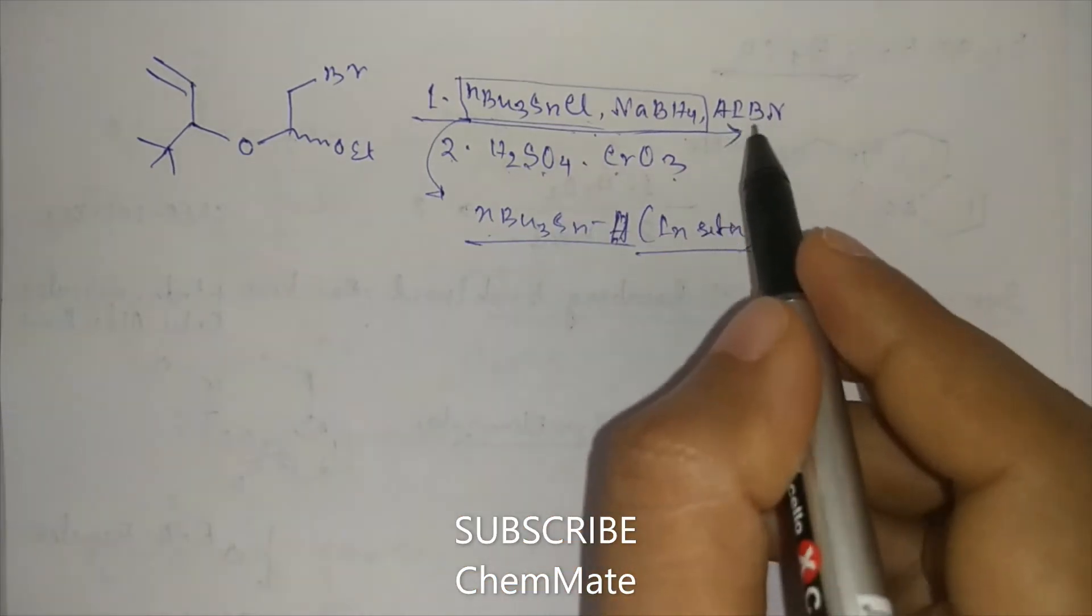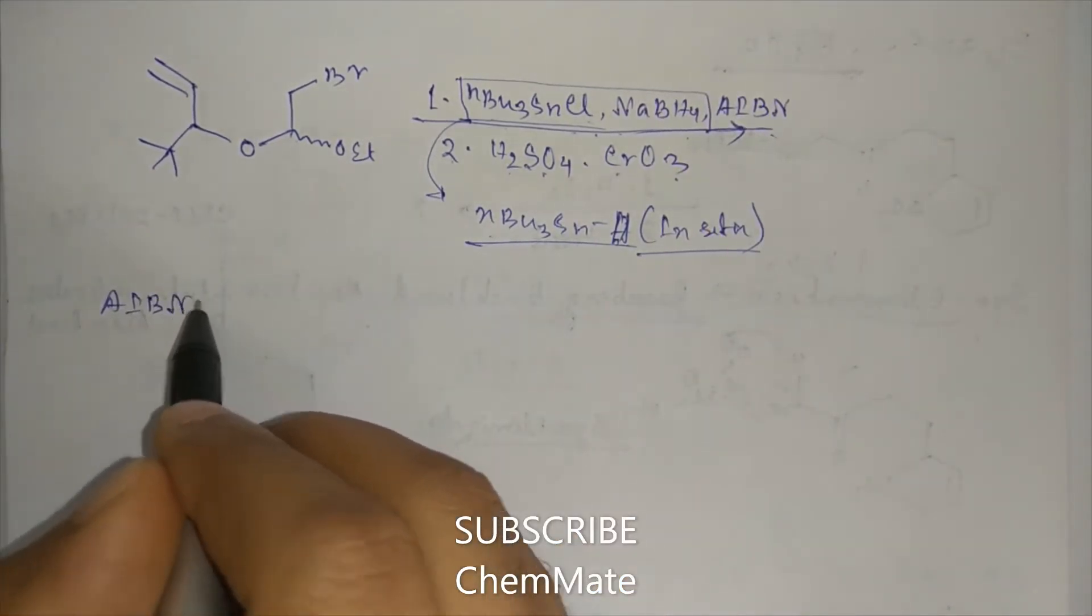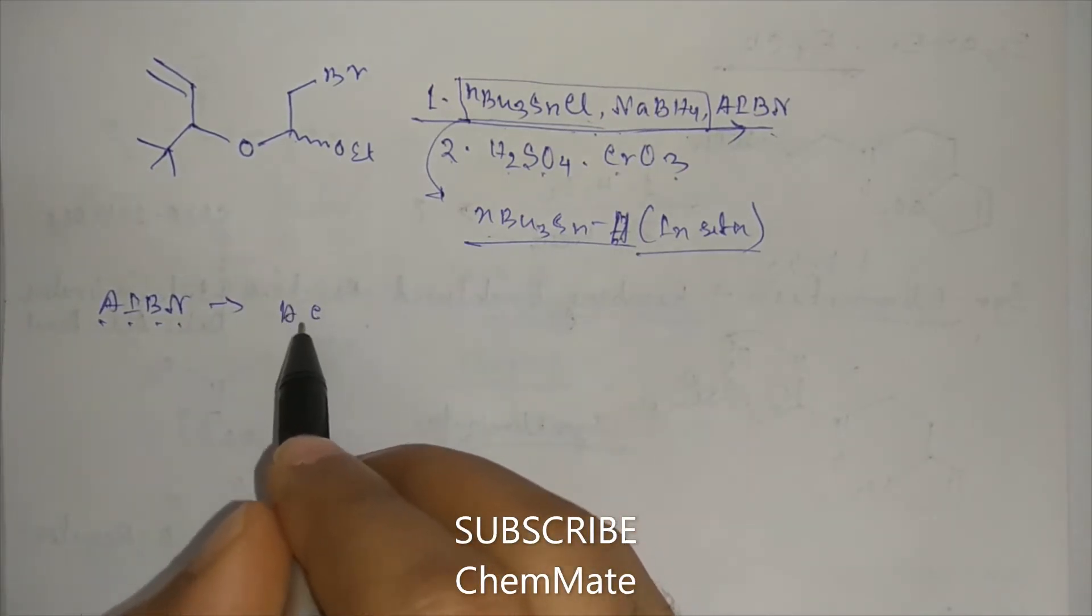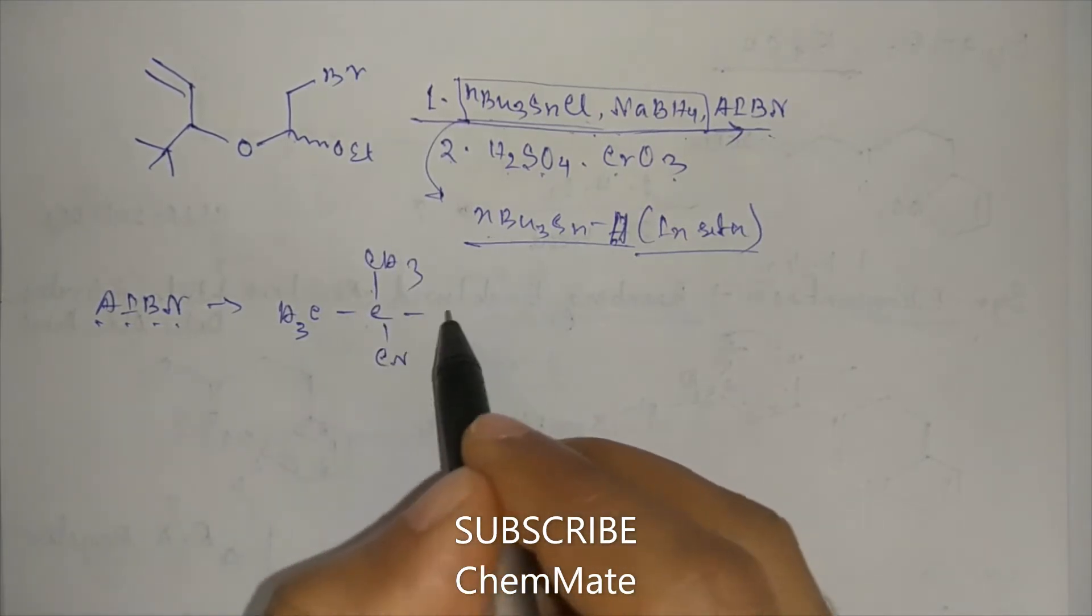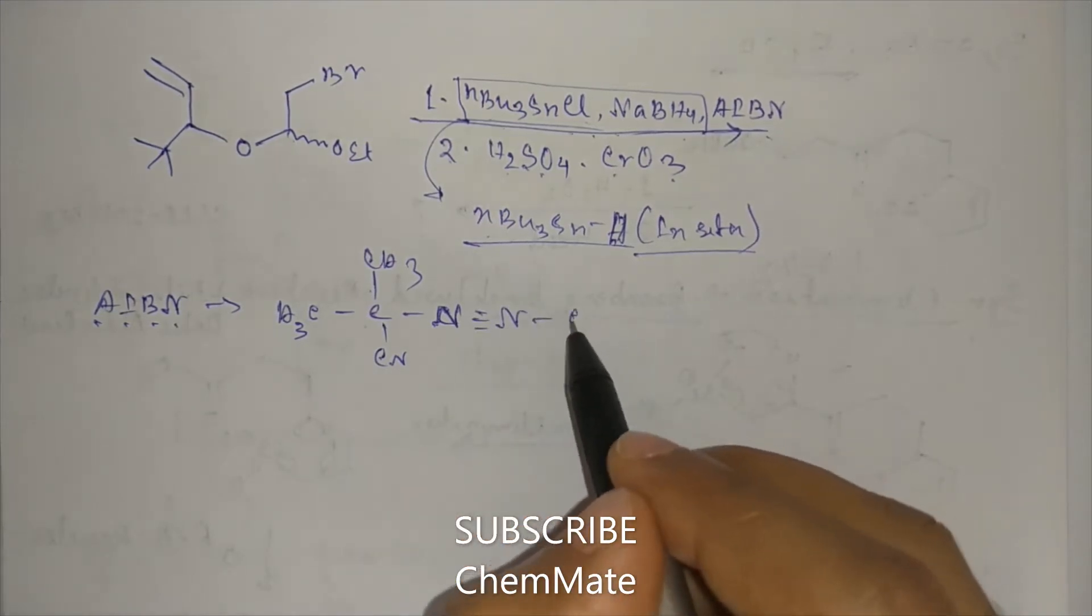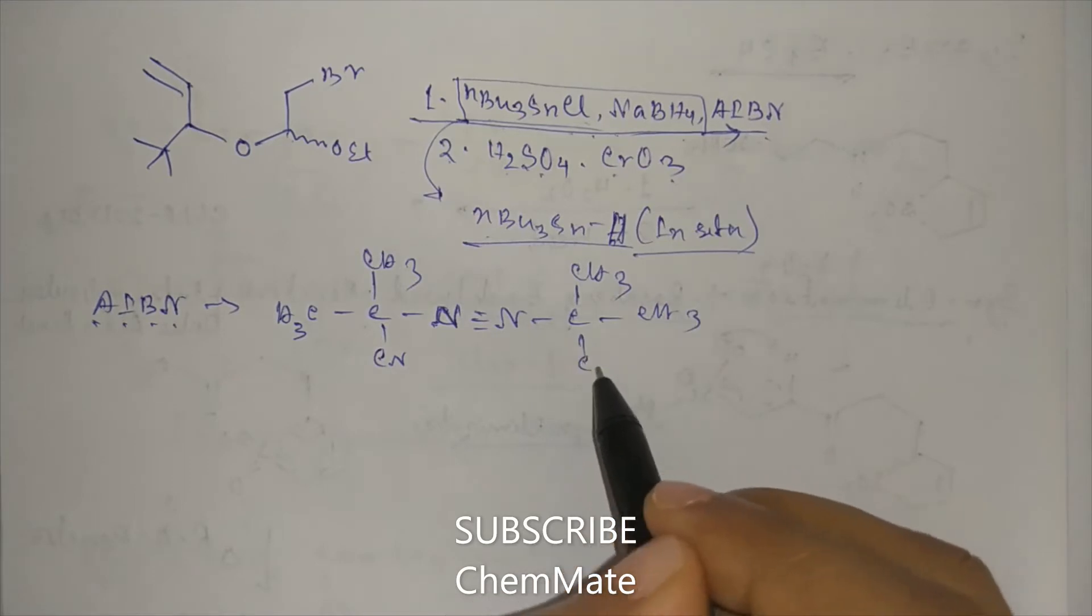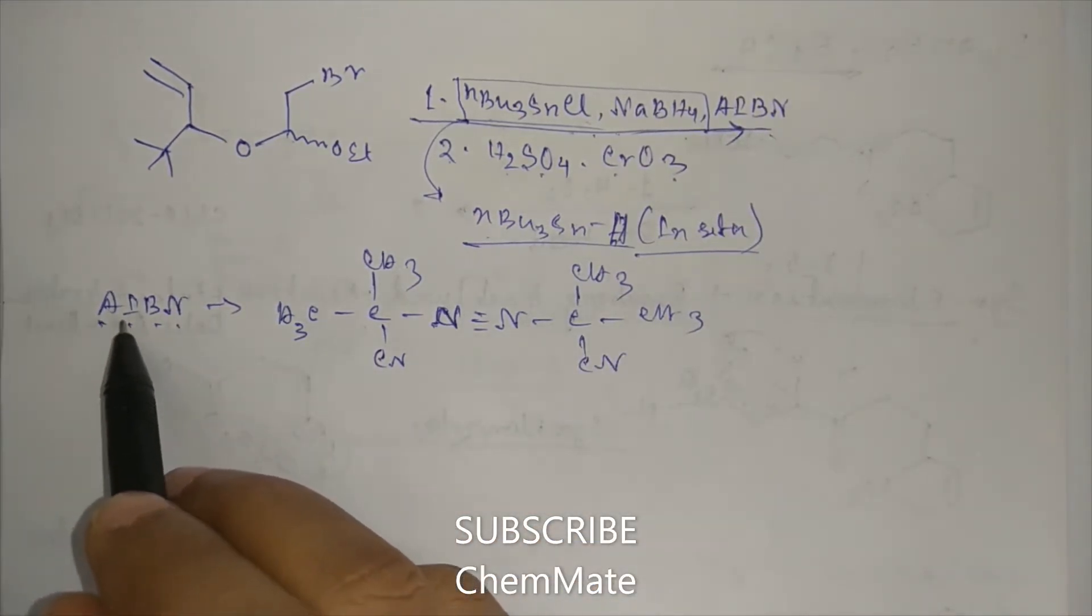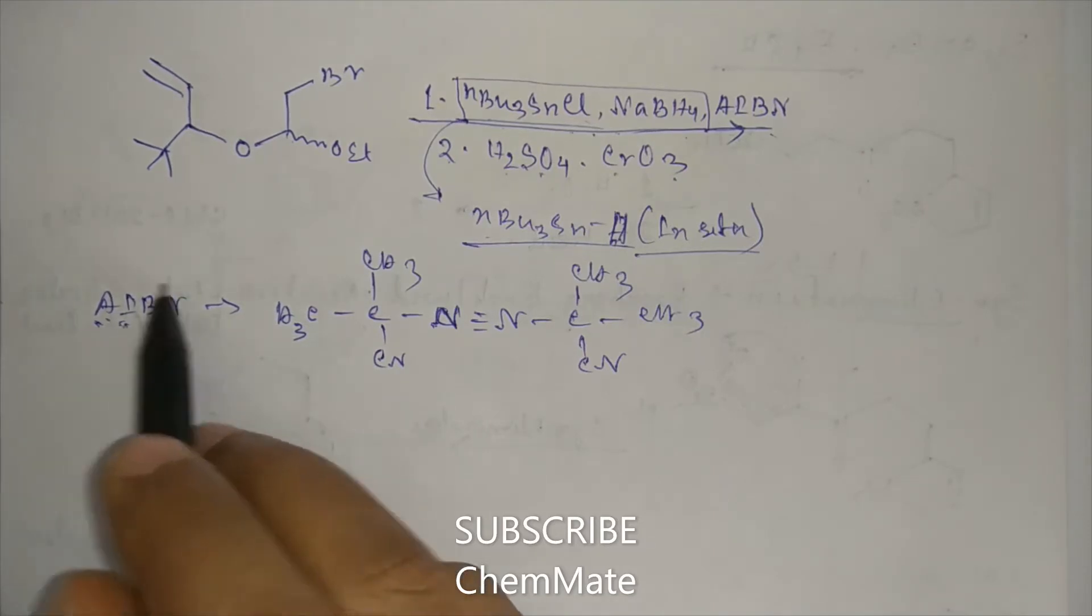So in presence of AIBN. AIBN is Azoisobutyronitrile. That is CH3C-CH3CN, N double bond N, C-CH3CH3CN. This is azo amine usually. Azoisobutyronitrile.